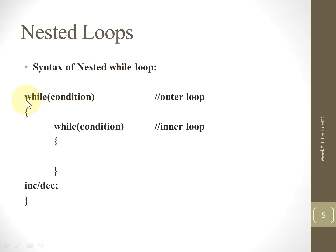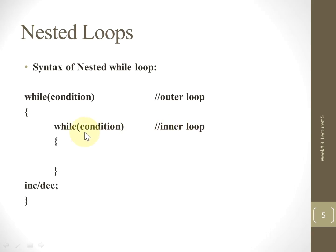Now let's see the syntax of the nested while loop. Again we have two loops — the outer loop and, within the body of the outer loop, an inner while loop. Once the outer loop condition is true, the control comes to the body of the outer loop where we have another loop called the inner loop. The inner loop condition is then checked.